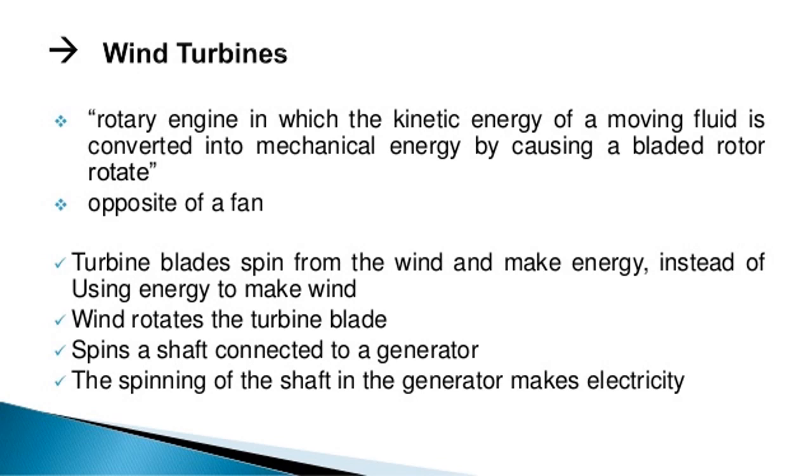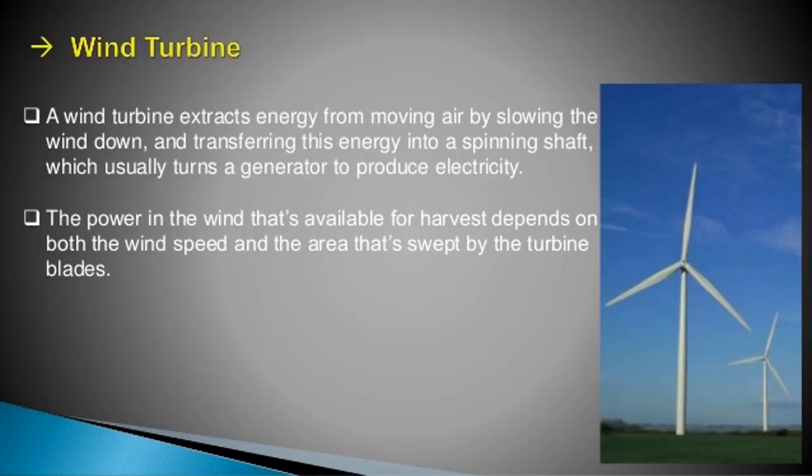Wind rotates the turbine blades, spins a shaft connected to a generator. The spinning of the shaft in the generator makes electricity.